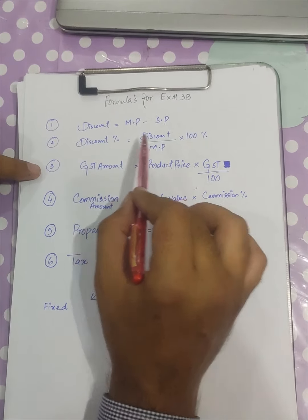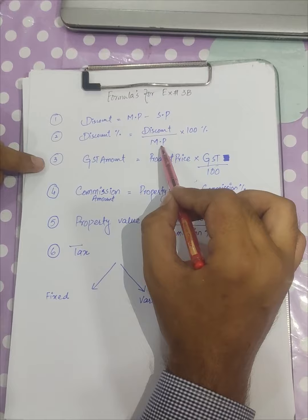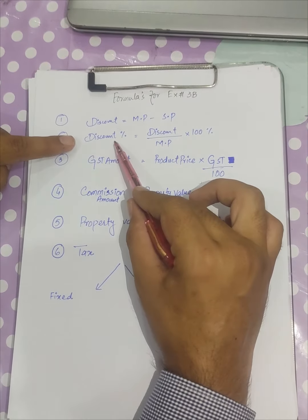In order to calculate the discount percentage, we will simply take the discount amount and divide it by the mark price and multiply it by 100. So we will get the discount percentage.